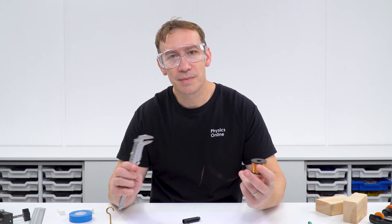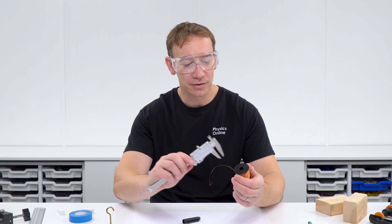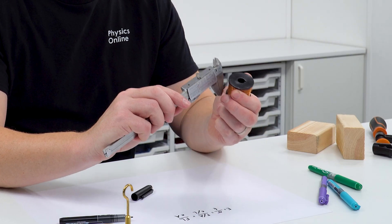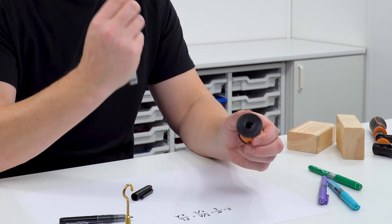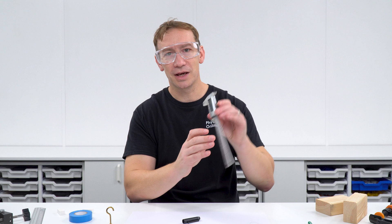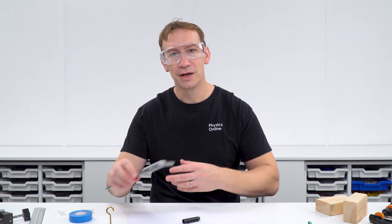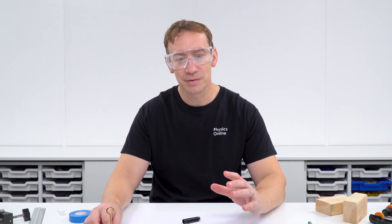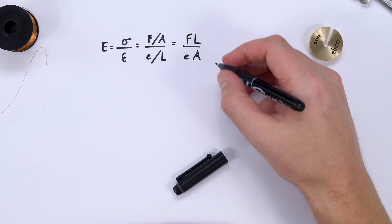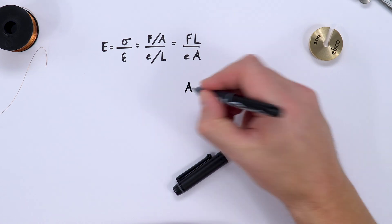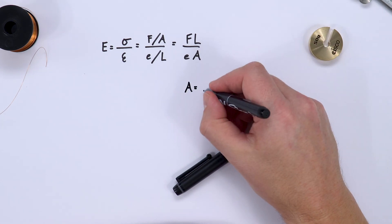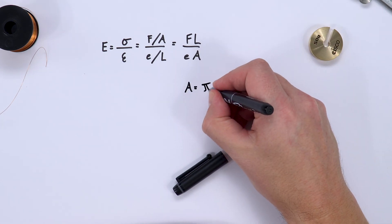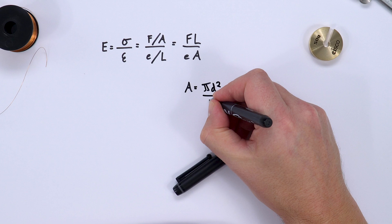When measuring the diameter of a wire, you want to take that measurement in at least three places. I'm using a digital scale here, but vernier scales or screw gauge micrometers can also be used. The diameter is related to the area by the equation A = πd² / 4.